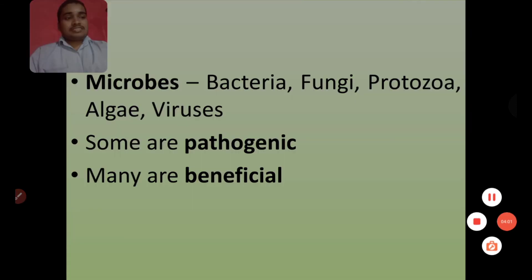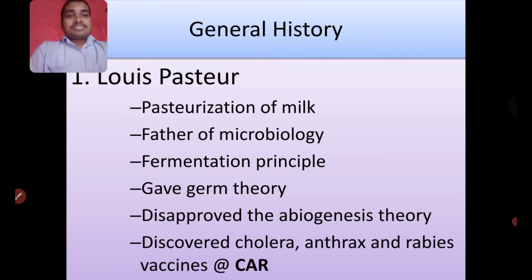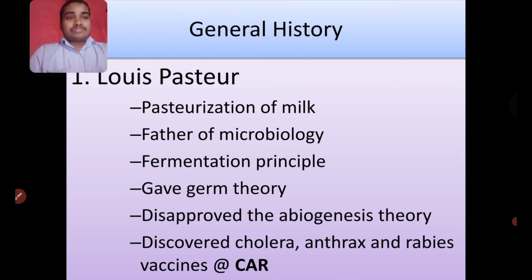Now let's go through the general history of microbiology. First comes the name of Sir Louis Pasteur. By the name Pasteur, we should remember pasteurization of milk — Louis Pasteur gave us the pasteurization of milk. He is known as the father of microbiology. He gave us the fermentation principle and the germ theory, which is very famous. He also discovered the cholera, anthrax, and rabies vaccines — remember it as CAR. The Pasteur Institute is located in Paris.